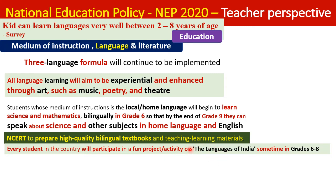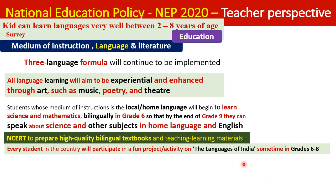All students — whether in private or public schools — have the option to study at least two years of classical Indian languages through experiential and innovative technology-based approaches. This can be pursued from Grade 6 through Grade 12 and continued at the undergraduate and postgraduate level. Students may choose a language as an optional subject.